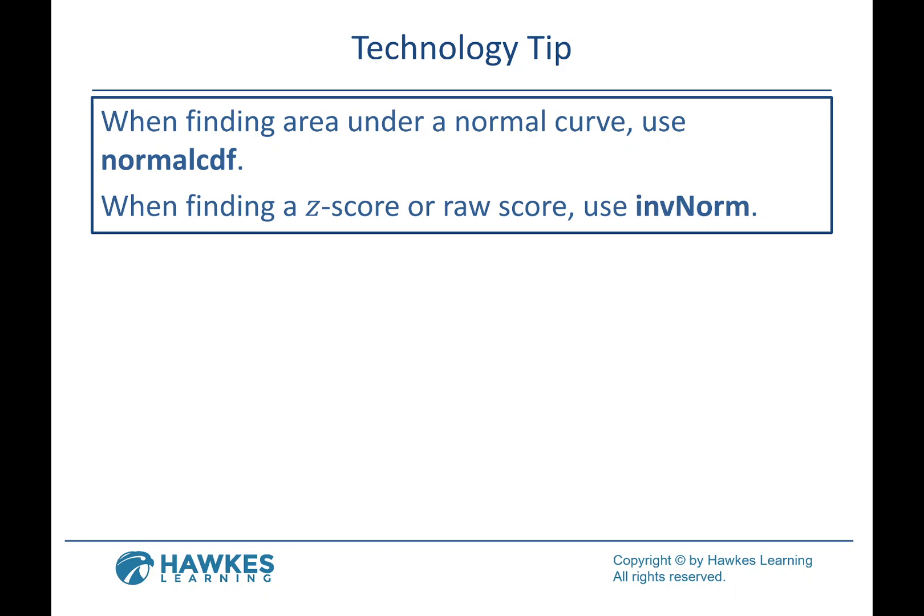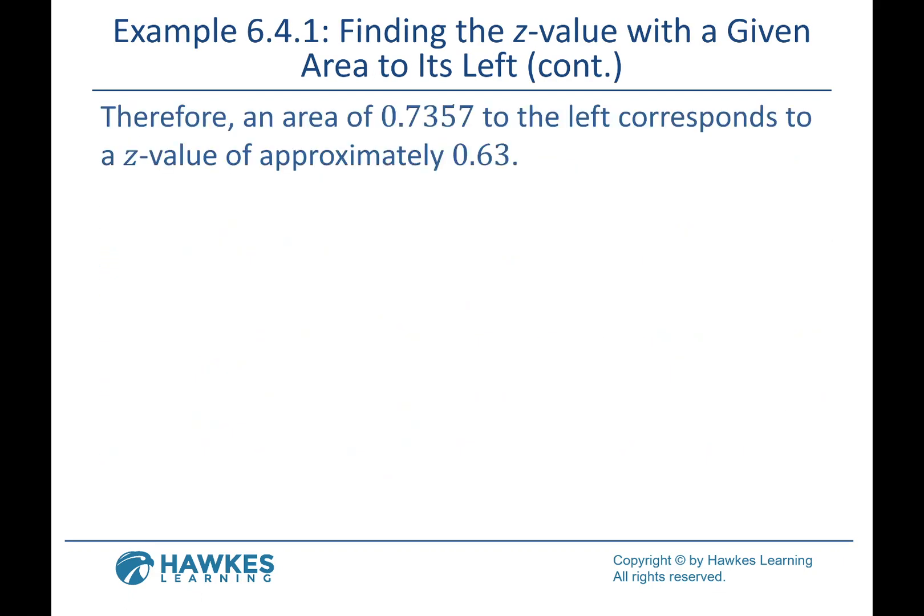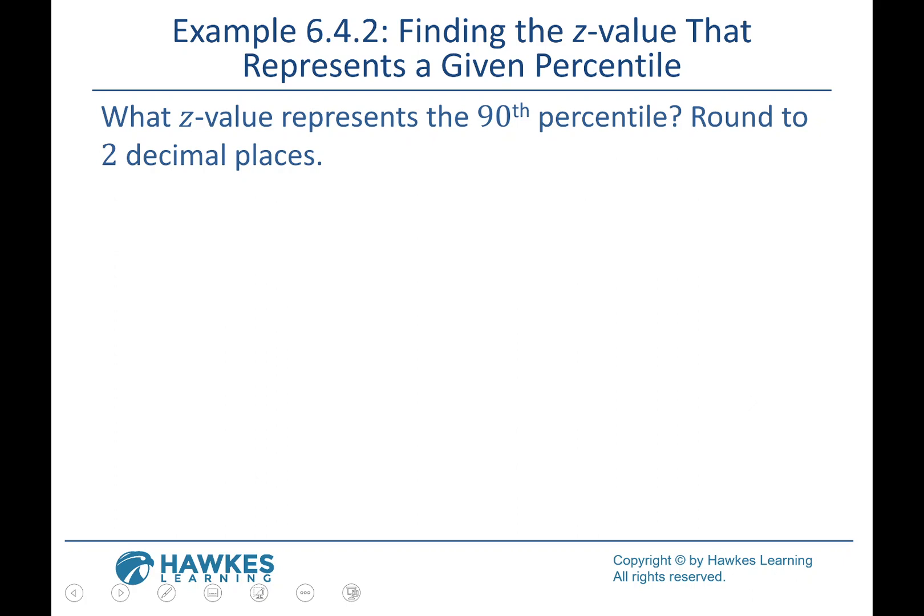Sometimes these problems can be worded a little differently. This one says: what z-value represents the 90th percentile? So what does percentile mean as far as area under the curve? It tells us something about 90 percent of the area, but we just have to know where that 90 percent of the area is located compared to our z.